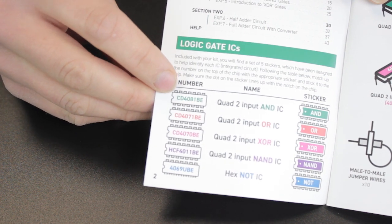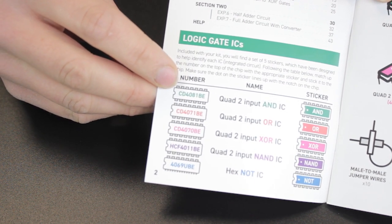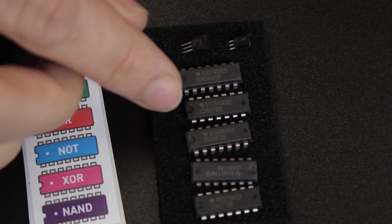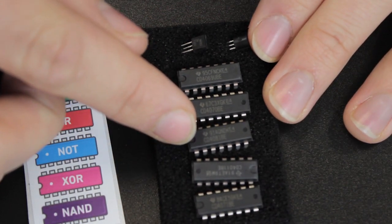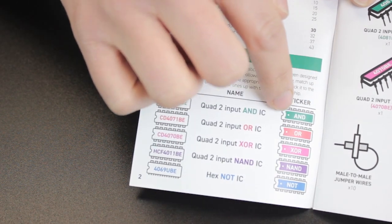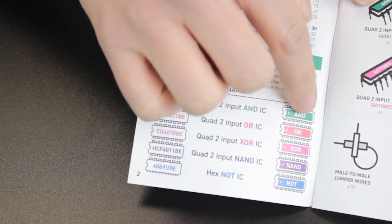First we look for the chip number in the left-hand column, which is this one here, and then we select the correct sticker from the right-hand column, in this case the AND sticker.